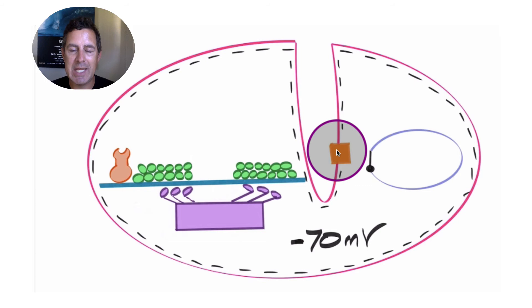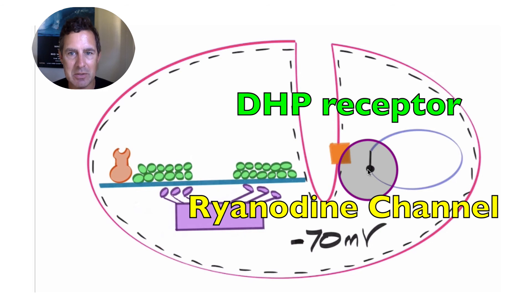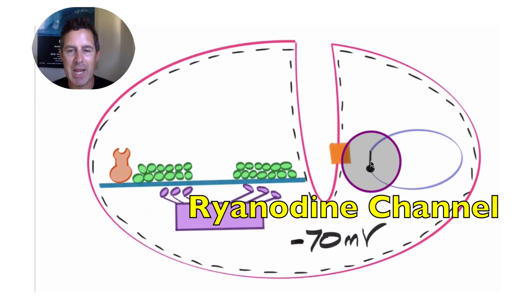Right here in orange is the DHP receptor. It is a protein embedded within the T-tubule that actually is physically connected to the sarcoplasmic reticulum. There's actually a link between the DHP receptor and this gate right here. The gate of the sarcoplasmic reticulum is known as the ryanidine channel.